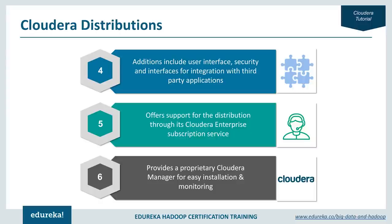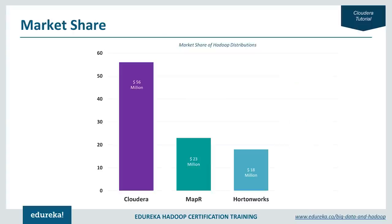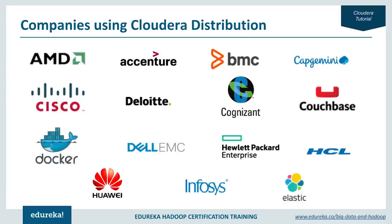Let me show you Cloudera's market share. These are the reasons why Cloudera is the most prominent distribution in the market today. Cloudera's market share is more than double compared to MapR and Hortonworks — Cloudera's market share is 56 million dollars, whereas MapR and Hortonworks are around 23 and 18 million dollars respectively. Many big companies use Cloudera distribution, including AMD, Accenture, Capgemini, Cisco, Deloitte, Cognizant, Couchbase, Docker, and Dell EMC.